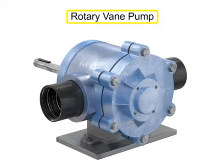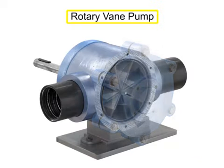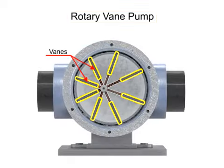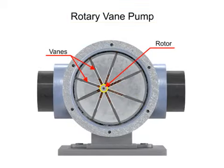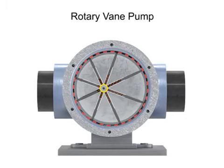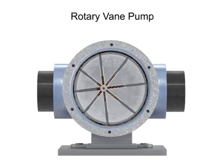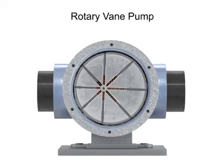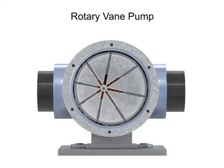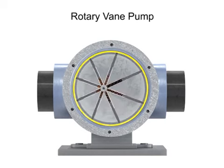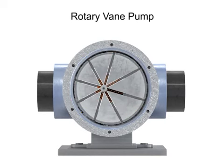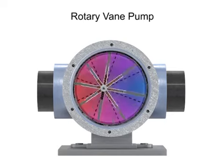A rotary vane pump is a positive displacement pump that consists of vanes mounted to a rotor. The vanes are on an off-center drive shaft. As the shaft rotates, the variable-length vanes slide in and out to maintain contact with the pump housing. The tension in the vanes is maintained by either springs or hydraulic pressure, and as the vanes rotate, they create chambers of varying sizes within the pump.